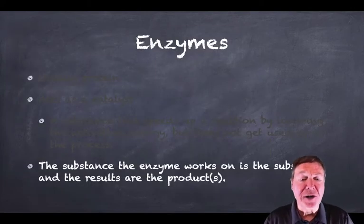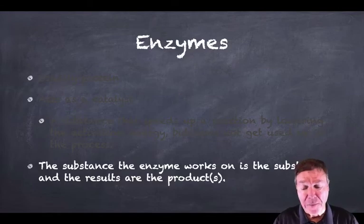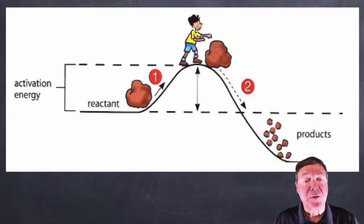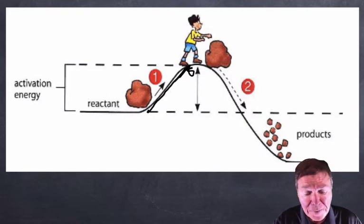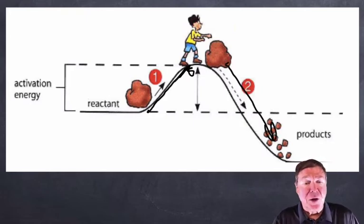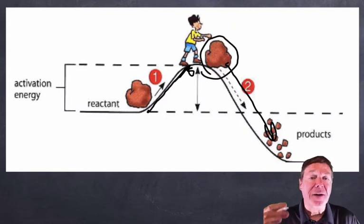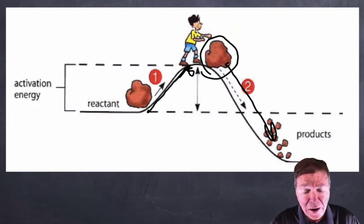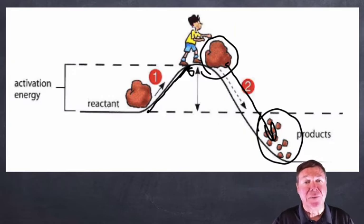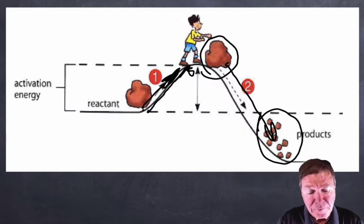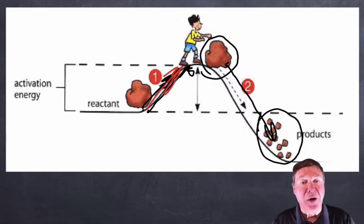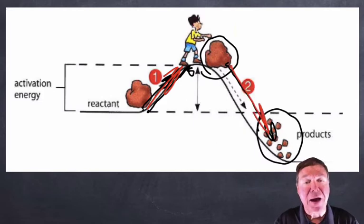The substance that an enzyme works on is called the substrate. The results are the products. So going back to the example of rolling the rock up, you can see that this kid is going to start the reaction, add energy into the reaction to get it to the top of the hill. But once it's at the top, it can roll down. So the substrate is the rock. That's the thing that the enzyme is going to be working on. The products are when it reaches the bottom that it actually breaks into little pieces. We have to add energy into the reaction to get it to where it'll happen automatically and we end up with the products.